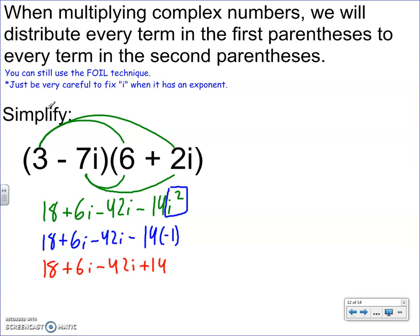Now I'm going to combine for my final answer. So 18 plus 14, that's 32. Positive 6I minus 42I, that's negative 36I. That's the answer.